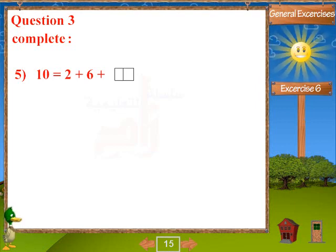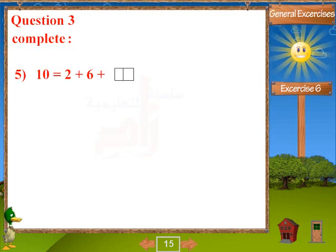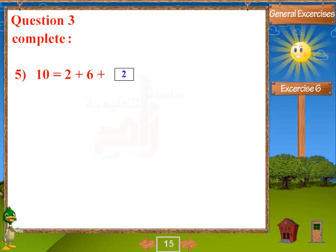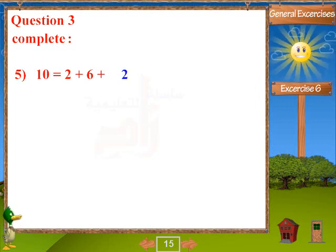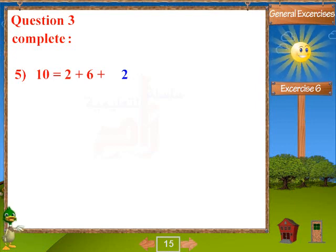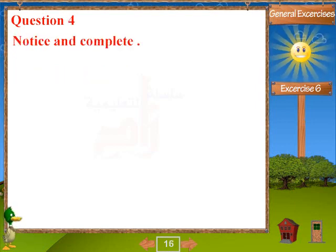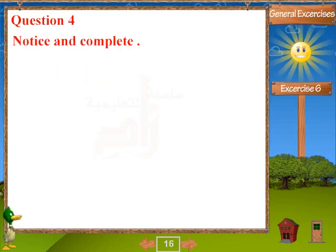Problem 5: 10 equals 2 plus 6 plus blank. Answer: 2.